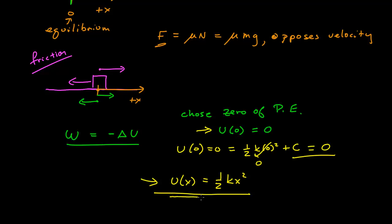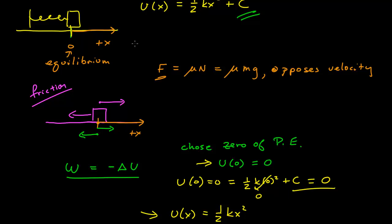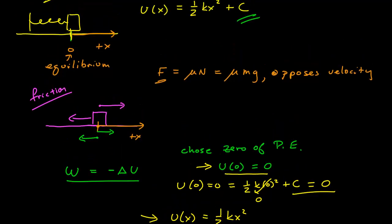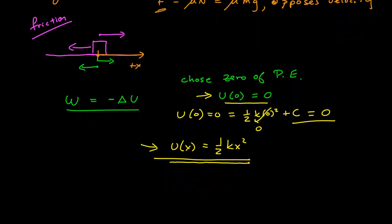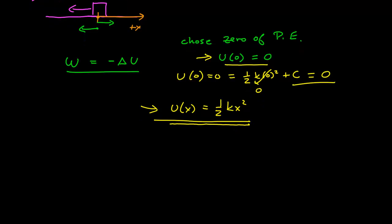This representation of the spring's potential energy function depends, first, on the choice of coordinate system — where the zero of our coordinate system is at equilibrium — and also on our choice of zero of potential energy, which we've chosen to be at the equilibrium position. For springs, you're almost always going to find it most useful to choose the zero of potential energy at equilibrium, though not always.